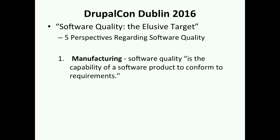Simply conforming to requirements is no guarantee that the software actually works. I've worked with development managers who will say in the end: 'Yes, we've satisfied the requirements, we're done, it's released, next project.' But this may not be what the end user wants. Just because it conforms to requirements doesn't mean it's still not full of bugs — you can't just conform to requirements and release without ensuring quality.